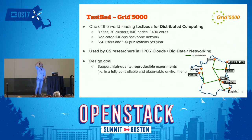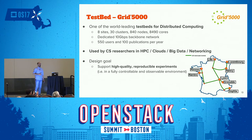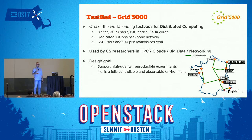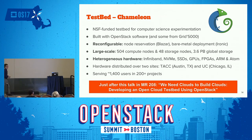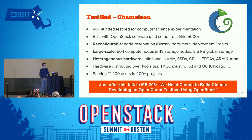We use two testbeds: Grid5000 and Chameleon. Grid5000 is a testbed for distributed computing, quite well known in the academic world. It is used by computer science researchers in HPC, cloud, big data, and networking. The idea is that you get whole resources — real bare metal — and can do what you want with it, performing any kind of experiment in a reproducible way.